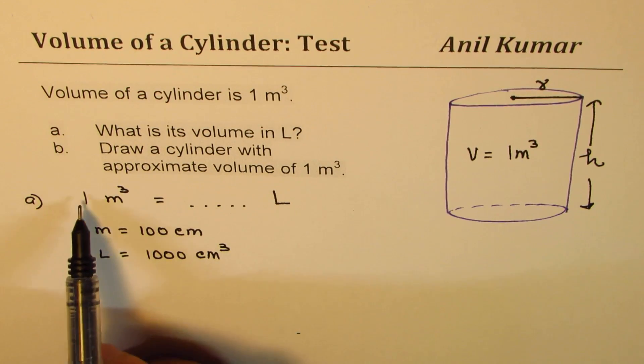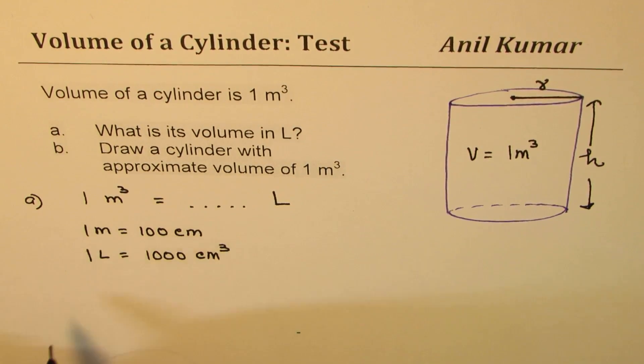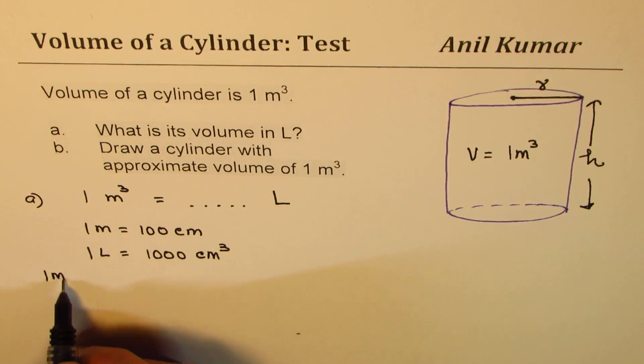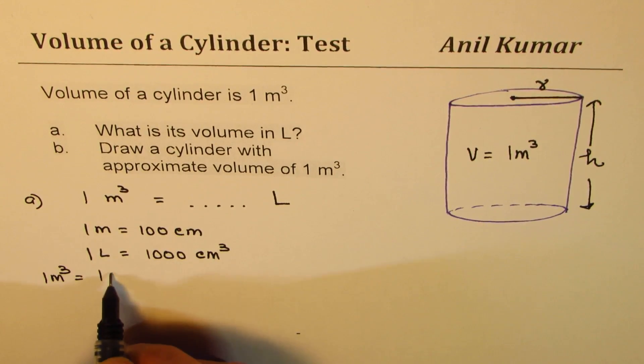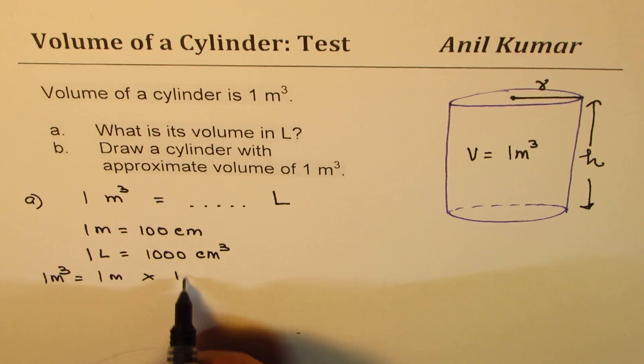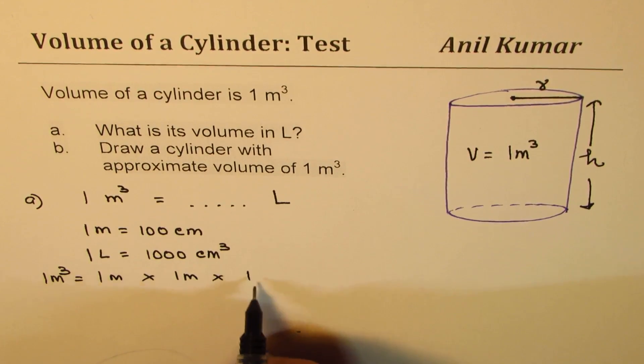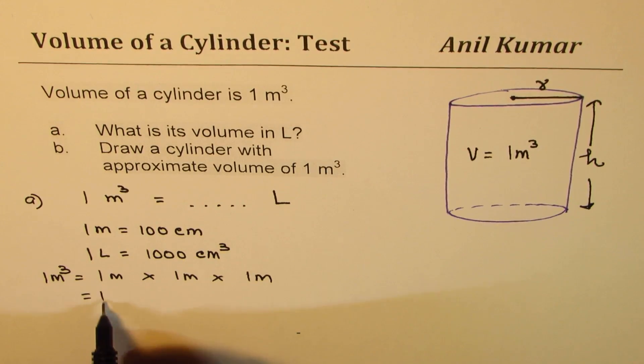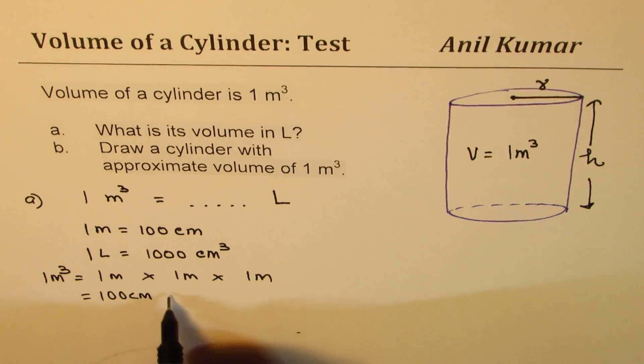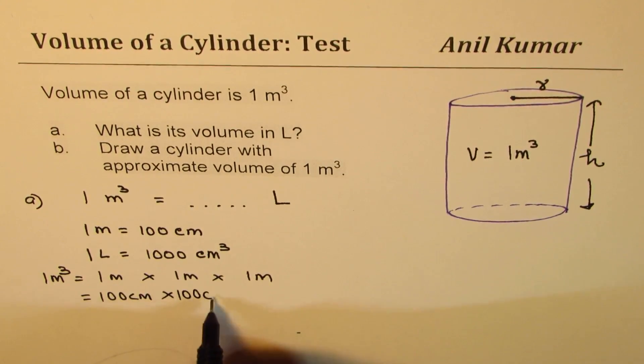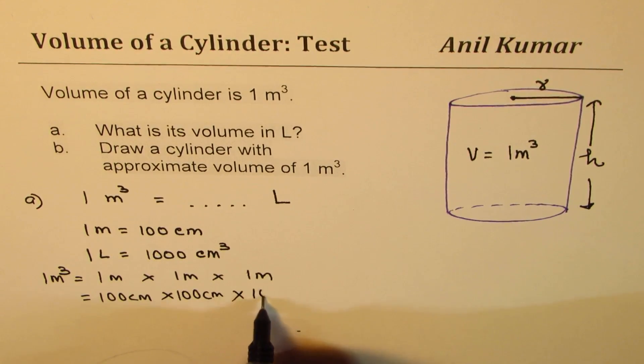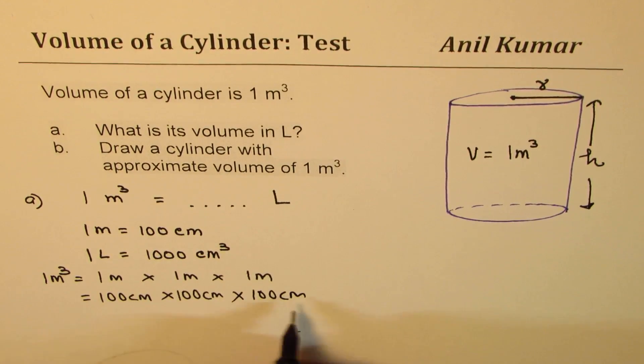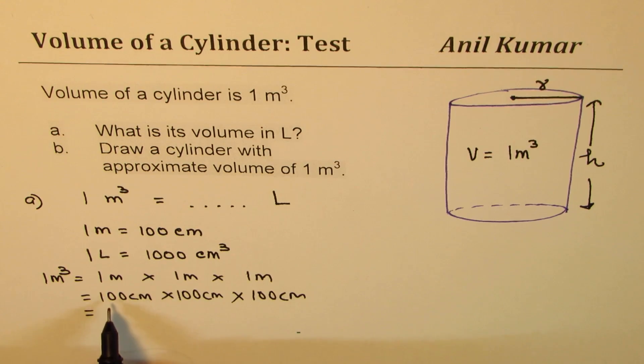Now let's convert. One meter cube really means what? If I write one meter cube, I mean to say one meter times one meter times one meter. Now one meter is 100 centimeters. So I can say one meter times 100 centimeters. How much is that?